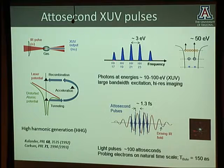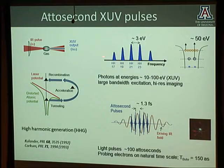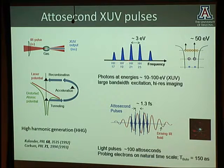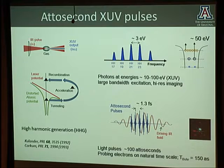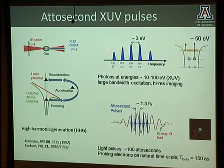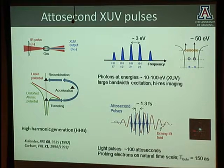These high harmonics span from tens to hundreds of eV, forming a comb of frequencies—you may have heard of frequency combs. The bandwidth and energy is so high that you can address not only valence electrons, which you can do with femtosecond lasers, but also inner electrons—all electrons simultaneously because of the huge bandwidth. These harmonics are generated through the microscopic picture proposed by Corkum and Kulander in the early 90s.